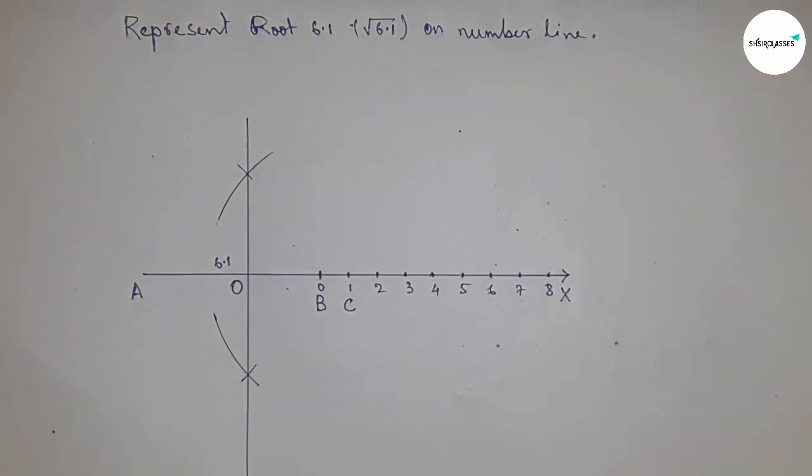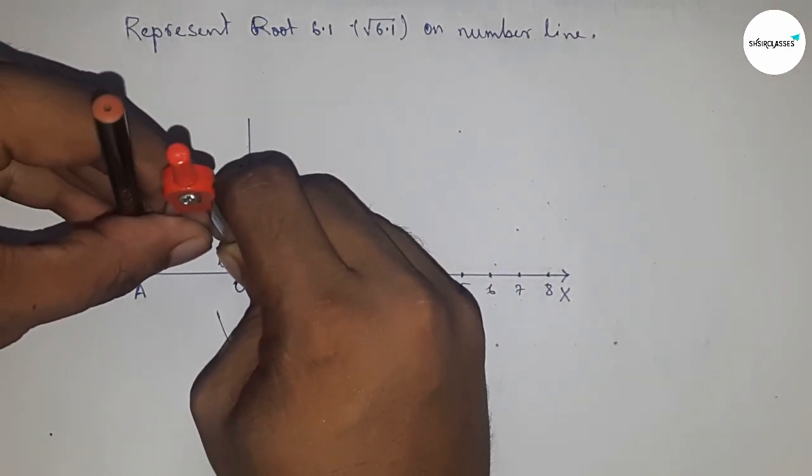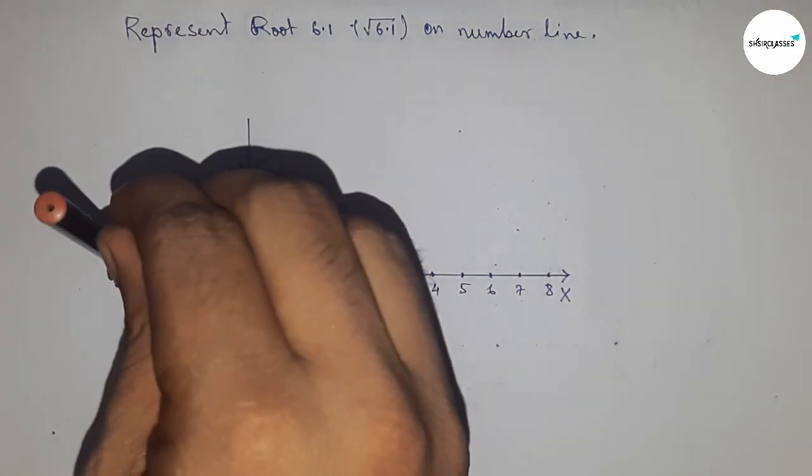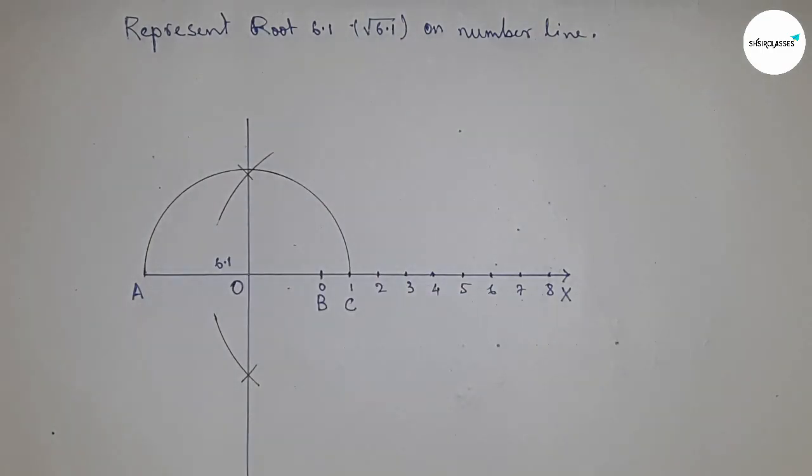Now take the distance OA and OC to draw a semicircle through the points A and C.